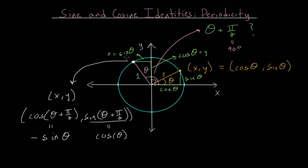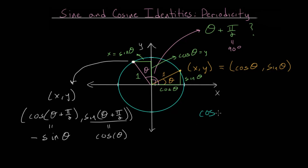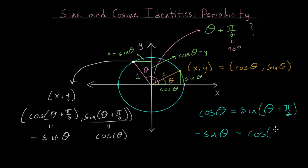The sine of theta in our triangle is just the magnitude or length of the line, but the negative sign tells us the direction — and we know that on the left half of the coordinate plane x-values are negative. So we can rewrite these more clearly: the cosine of theta is equal to the sine of theta plus pi over 2, and the negative of the sine of theta is equal to the cosine of theta plus pi over 2.